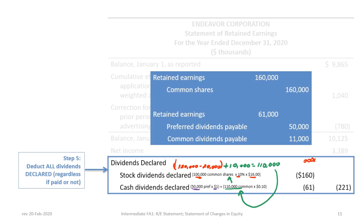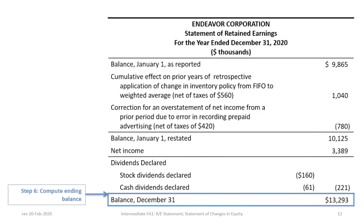The journal entry for dividends is in the blue shaded area: we debit retained earnings $160,000 and credit common shares for the stock dividend; for cash dividends we debit retained earnings $61,000 and credit preferred dividends payable $50,000 and common share dividends payable $11,000. The final step is to calculate the ending balance. Starting from the restated beginning balance of $10,125,000, adding net income of $3,389,000 and subtracting total dividends of $221,000 gives an ending retained earnings balance of $13,293,000.